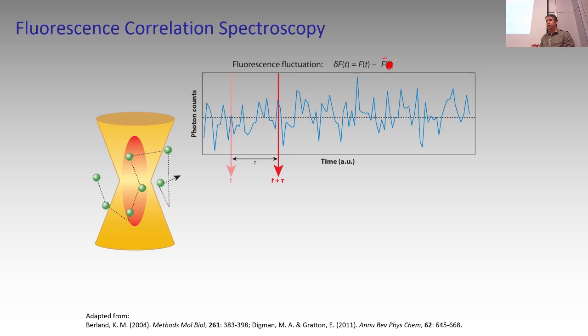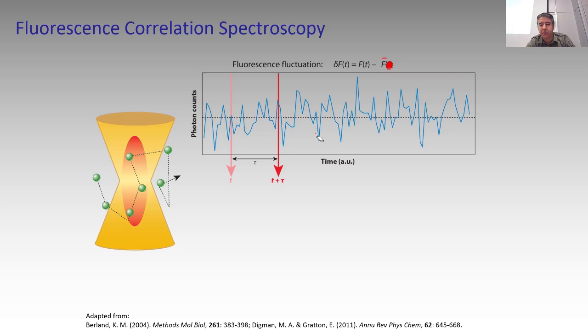If molecules are moving really, really fast, a fluctuation to 25 at one moment means some short time later I might see 20 again. If they're moving slowly, that same short time period later I'll still see 25. It's not just whether I have something above or below average — it's whether the fluctuation is still correlated to what I'm seeing some time tau later. If I wait long enough, the fluctuations become decorrelated.